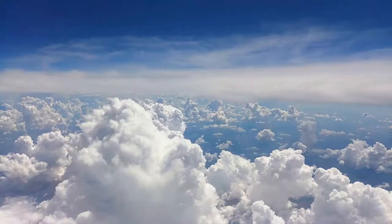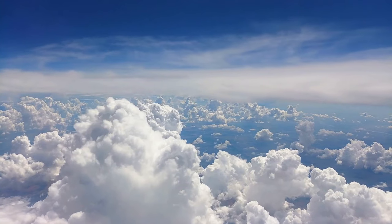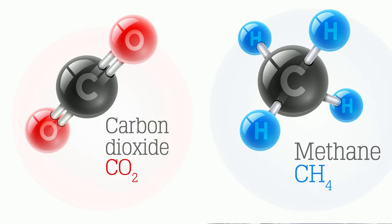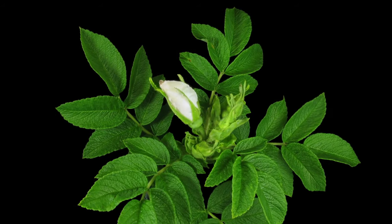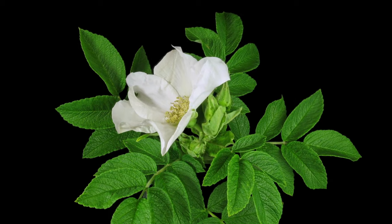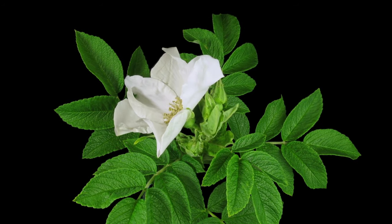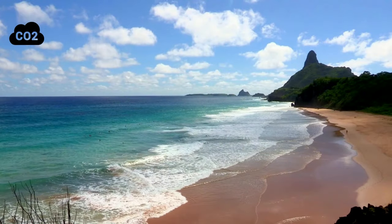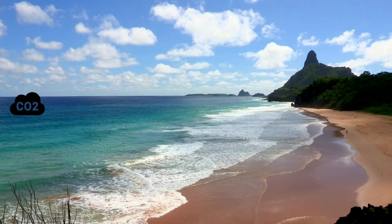Carbon is found in the atmosphere in at least two forms: carbon dioxide and methane. This atmospheric carbon can be absorbed by autotrophs like plants and plankton to be used for photosynthesis. It can also be absorbed by bodies of water and the ocean. When carbon is absorbed by the ocean, it reacts with the water and creates carbonic acid.